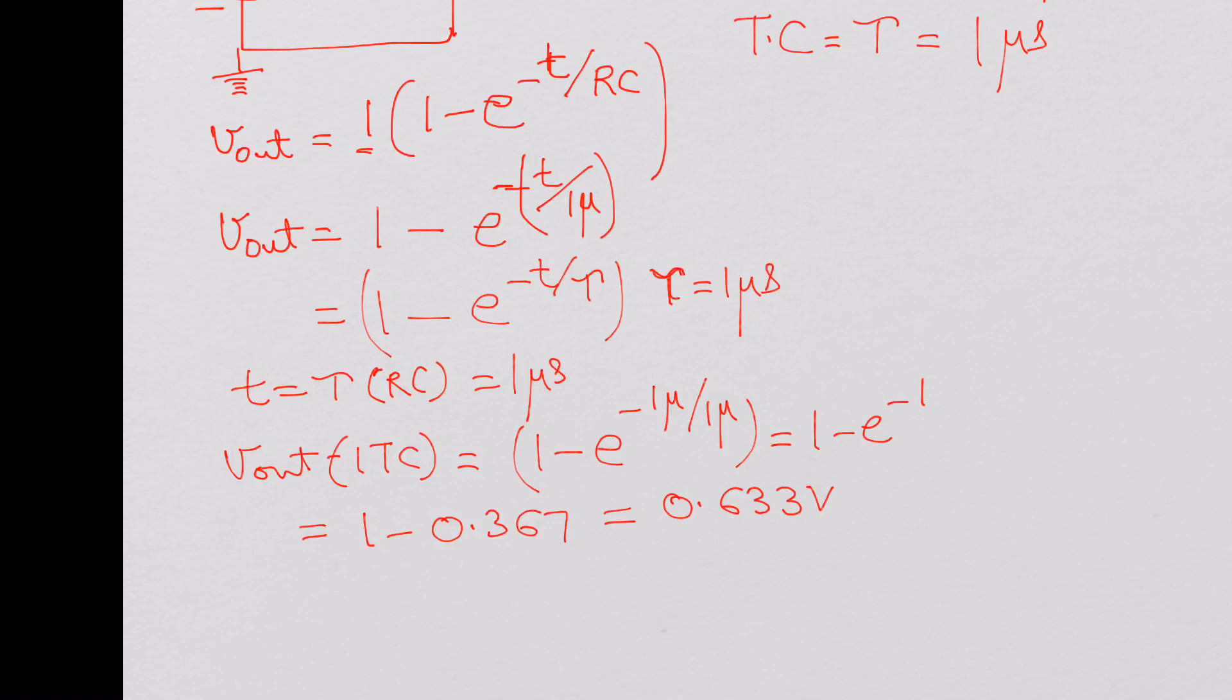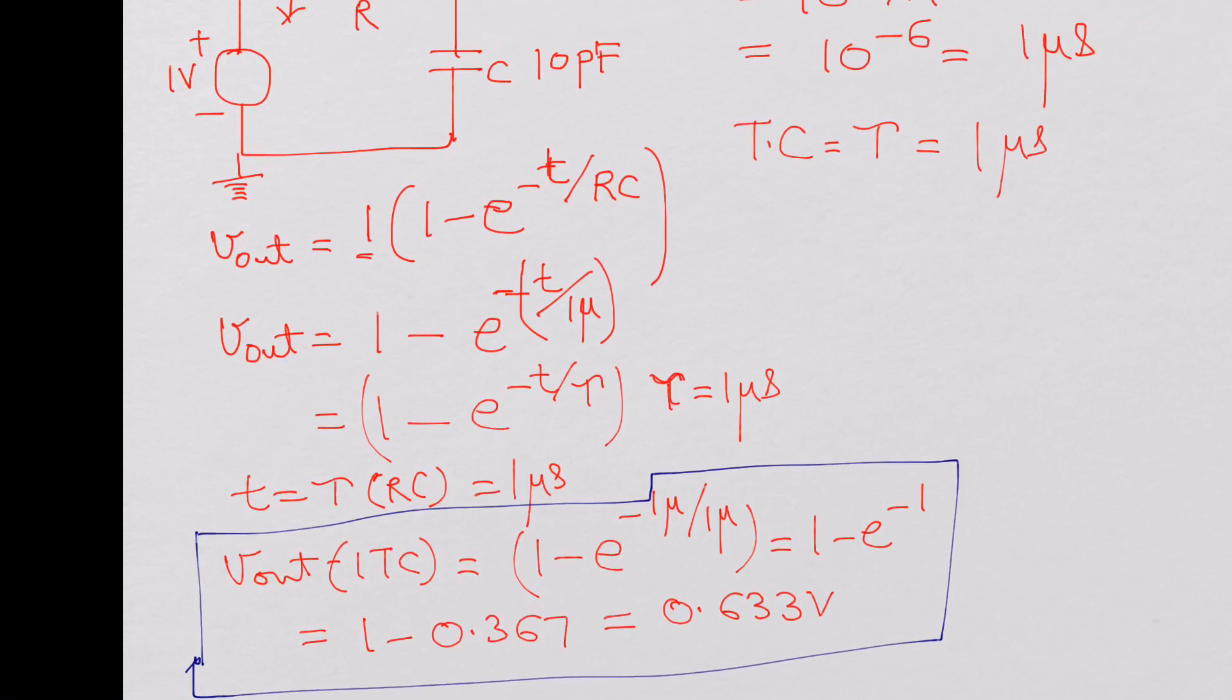So if you had a 1 volt supply and an RC circuit with the time constant of 1 microsecond, after 1 microsecond the capacitor is charged to 0.633 volts out of the total 1 volt.